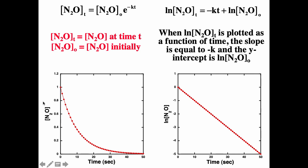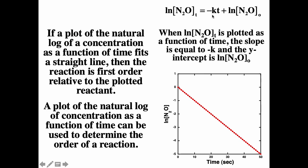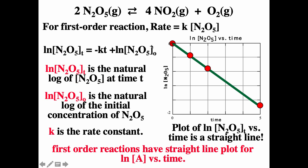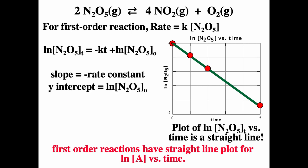If we plot the concentration as a function of time, we see nice exponential behavior — the initial concentration is 1 in this case. If we plot the natural log of the concentration as a function of time, we get a straight line, with slope equal to minus k. One way of determining rate constants is plotting the natural log of the concentration as a function of time, as long as you know it's a first order reaction. This is only for a first order process.